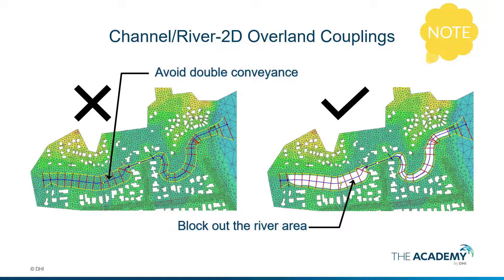Channels and river networks may be coupled to 2D overland models in MIC+. When doing so, avoid representing the river areas twice in the network model as well as the 2D model. Avoid double conveyance along the channels by blocking out or removing the river areas from the grid or mesh.